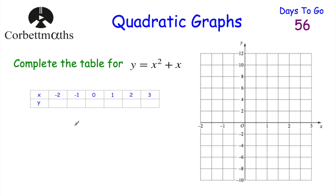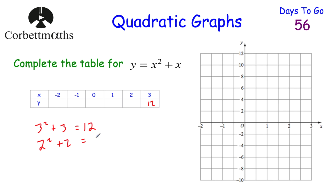If x equals 3, we do 3 squared plus 3 — that's 9 plus 3, which equals 12. When x equals 2, we do 2 squared plus 2 — that's 4 plus 2, which equals 6. When x equals 1, we do 1 squared plus 1 — that's 1 plus 1, which equals 2.